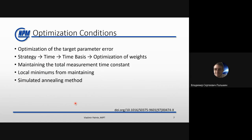Otherwise the strategy will grow like a balloon, but there will still be some parts that grow faster, meaning those parts have more information about our parameters. The second condition is that time cannot be negative. The optimizer would like to go to negative time because some parts have so little information that it's more profitable to measure them for negative time, allowing more important parts to be measured longer.